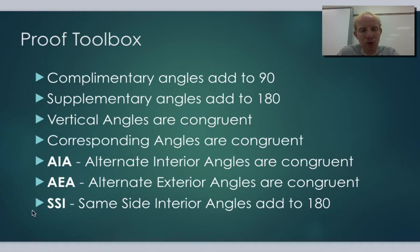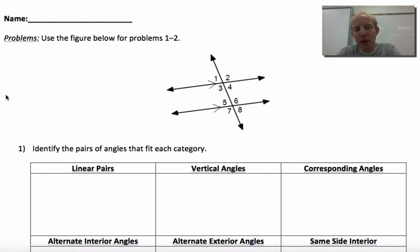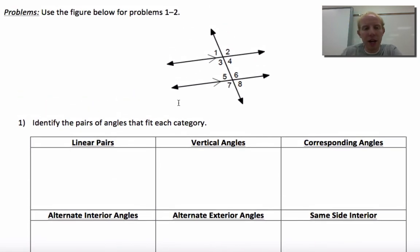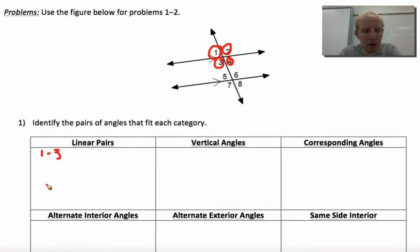For this class, you can use any of these tools when doing your homework. The first set of problems has you identifying angle relations. You'll identify linear pairs, vertical angles, corresponding angles, alternate interior, alternate exterior, and same side interior. For example, with linear pairs, one and three are a linear pair, two and four are a linear pair, five and seven, six and eight, one and two, three and four, and so on. Fill the box with all the linear pairs you can find.